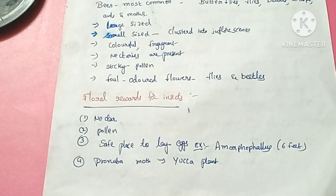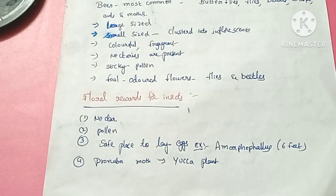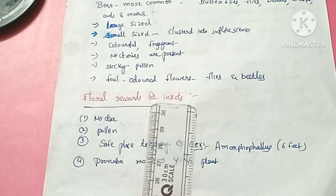Hello everyone. In the last video, we talked about entomophily, different biotic agents, and entomophily. We talked about the floral rewards of insects — the plants were pollinated because of these insects, and the plants were able to produce seeds. These insects provide some rewards like nectar, pollen, and a safe place to lay eggs.